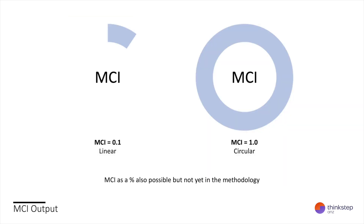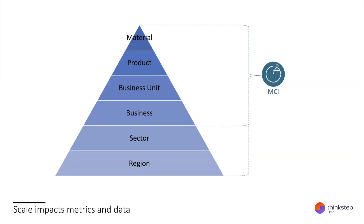The score ranges from 0.1 for a linear product to 1.0 for a perfectly circular product. It is possible to score less than 0.1, but only if your system is deliberately wasteful. The MCI score encapsulates the circularity of the product and all of the different circular economy strategies that have been deployed. The MCI can be applied to materials, components, products, and entire businesses or business units. We have also used the MCI to model the effectiveness of regional circular economy strategies, identify hotspots and model possible interventions.